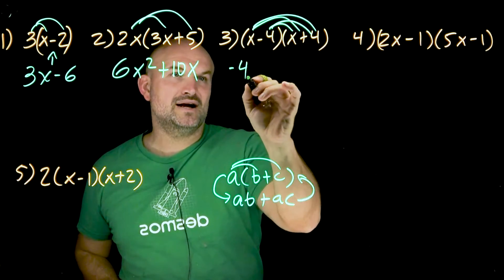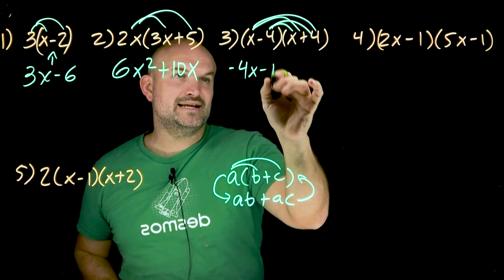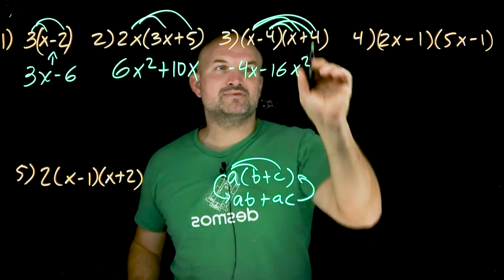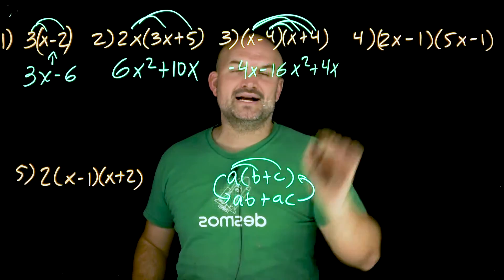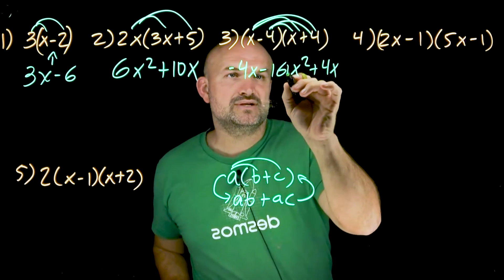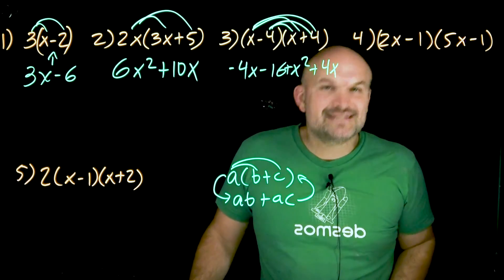So negative four times X is a negative four X. Negative four times four is going to be a negative 16. X times X is going to be a X squared. And X times four is going to be a positive four X. So the one thing I want you to recognize here is when I go ahead and simplify this, that's a plus X squared. When I go ahead and simplify this, I can say, well, I have an X squared.